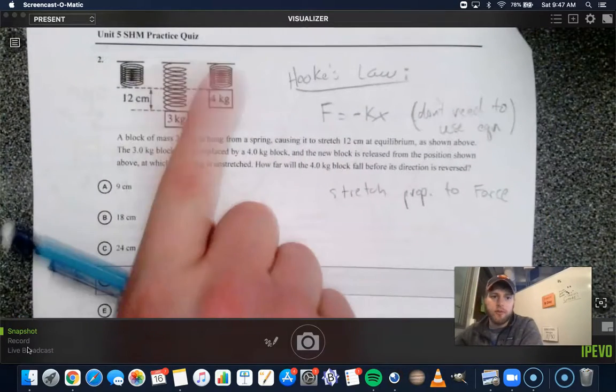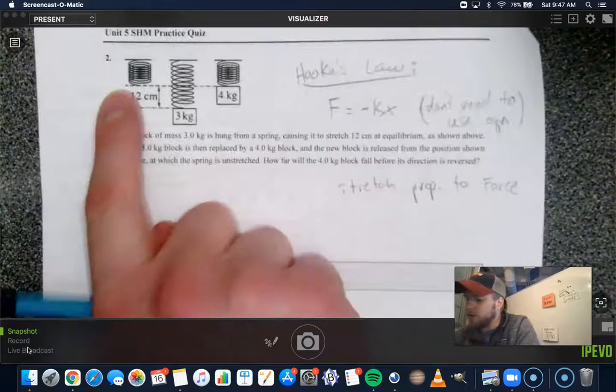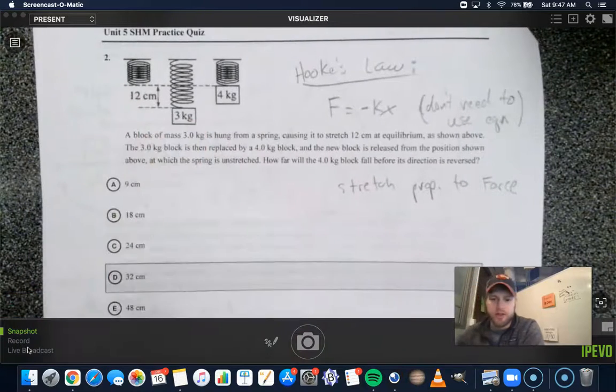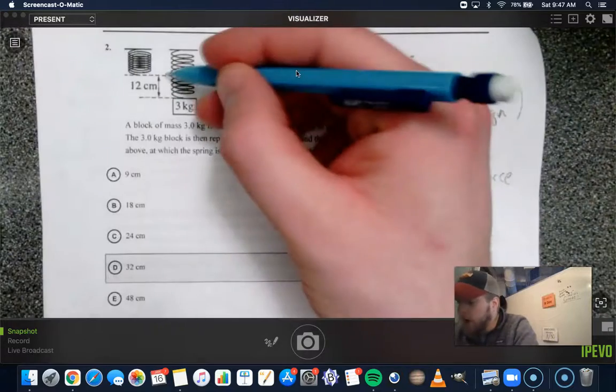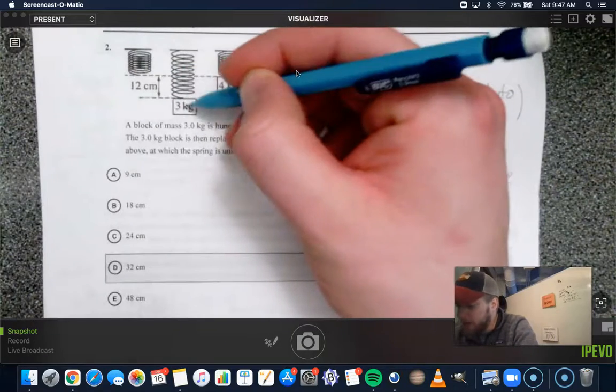So if we hang three kilograms off of this spring, it will stretch 12 centimeters below its unstretched position. That's actually really important for you to understand, that it's going to stretch below the unstretched position when we hang three kilograms off.